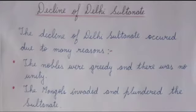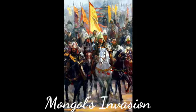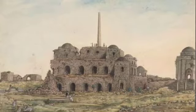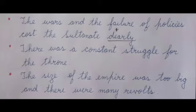Few are: firstly, the nobles were greedy and there was no unity. Secondly, the Mongols invaded and plundered the Sultanate. Thirdly, the wars and the failure of policies cost the Sultanate dearly — meaning a lot of money was used in different policies and in wars.